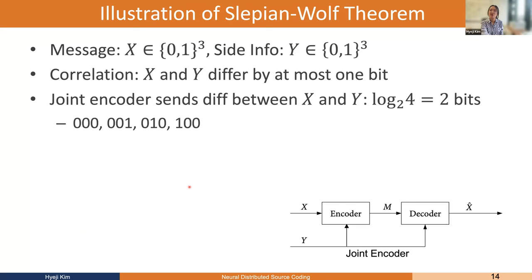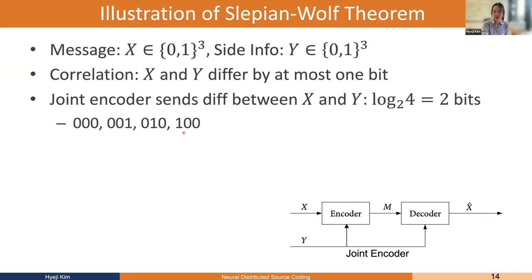To illustrate the Slepian-Wolf theorem, here's an example initially proposed by Pradhan and Ramchandran in 1999. The source X is a length-3 binary bit sequence, and Y is also a length-3 bit sequence, with correlation such that X and Y differ by at most one bit. In the joint encoder setting, the encoder computes the difference between X and Y, which can only be 000, 001, 010, or 100 — four possibilities — and sends the difference using just two bits. The decoder takes the difference plus Y and reconstructs X losslessly.